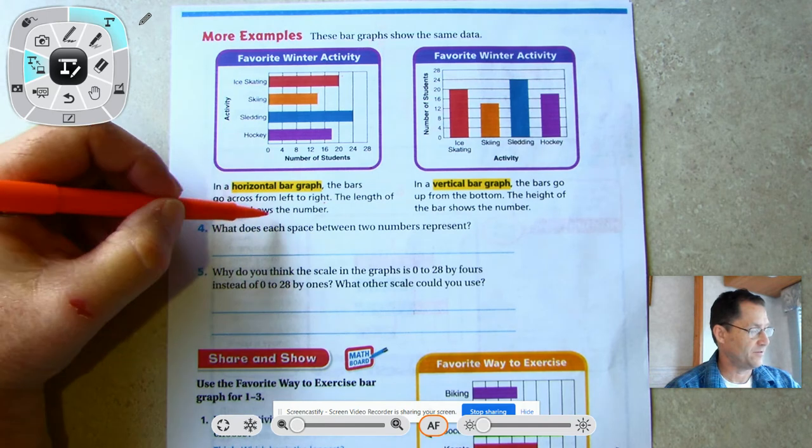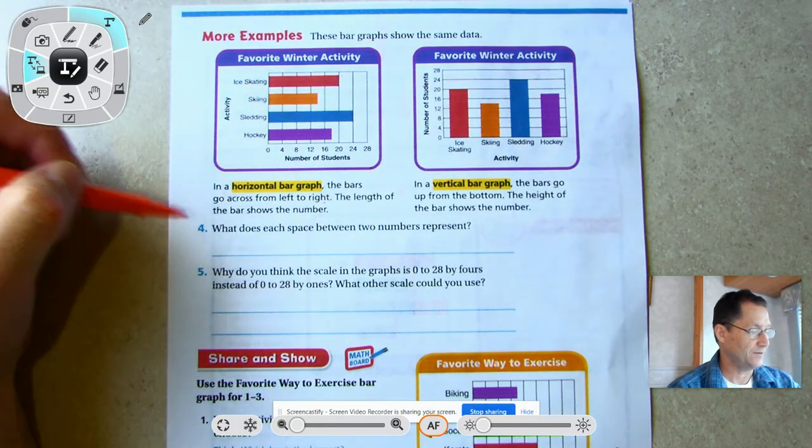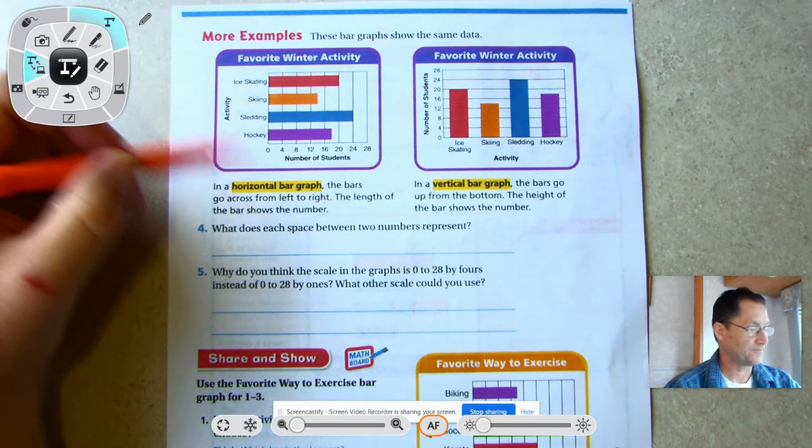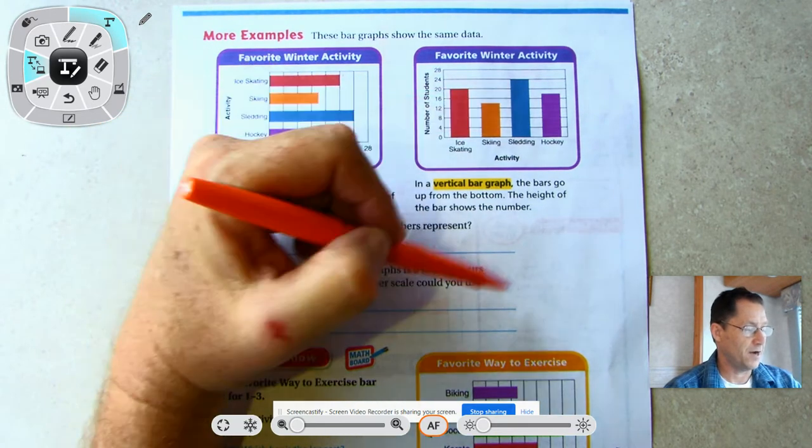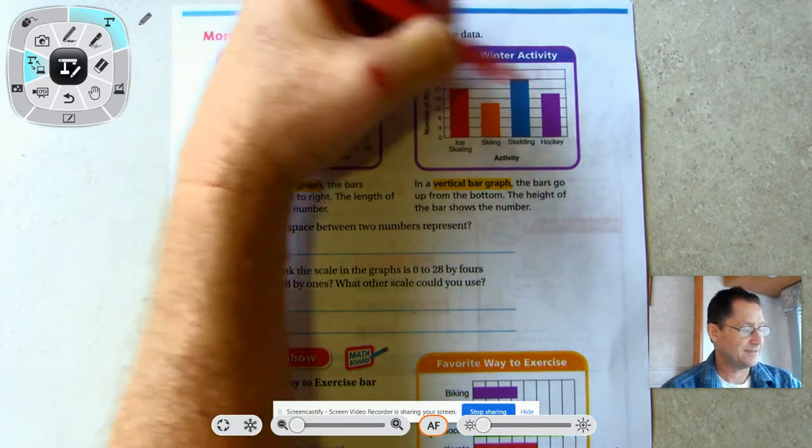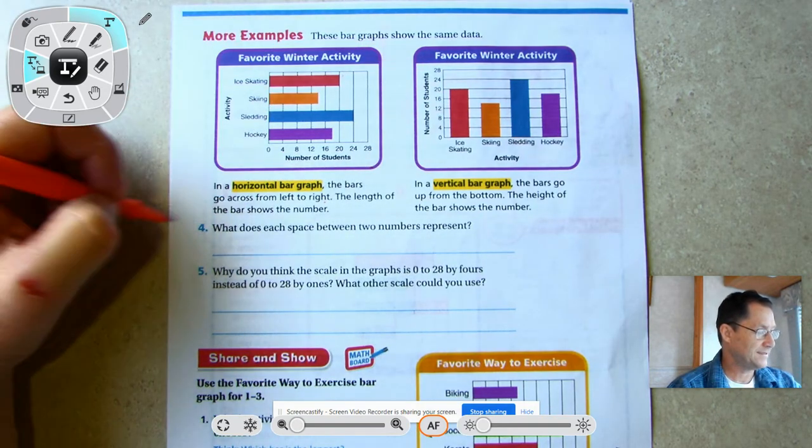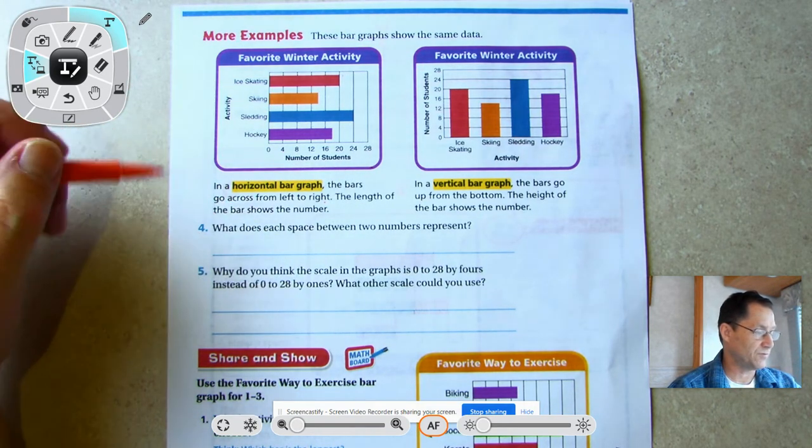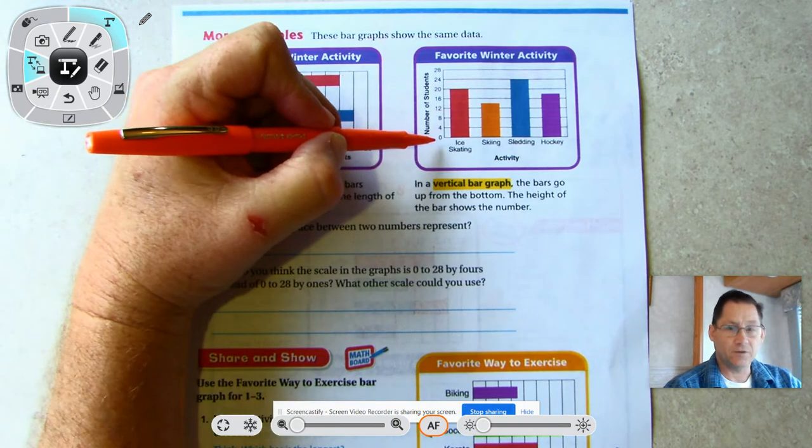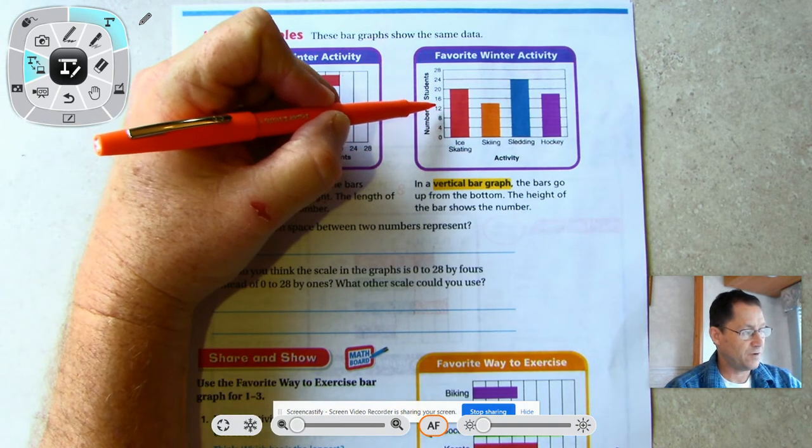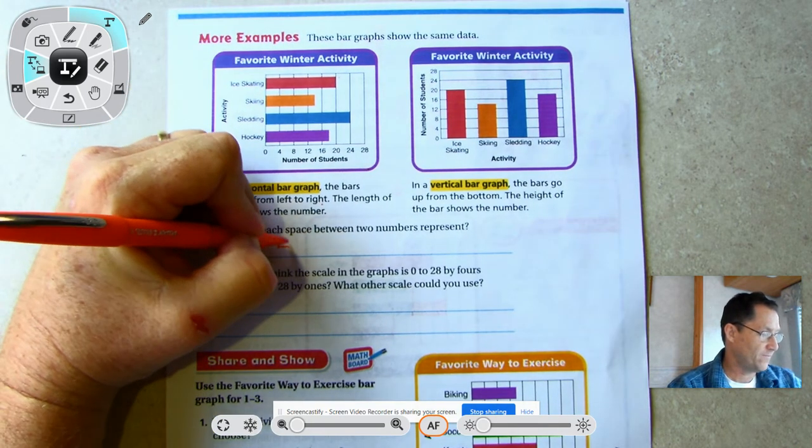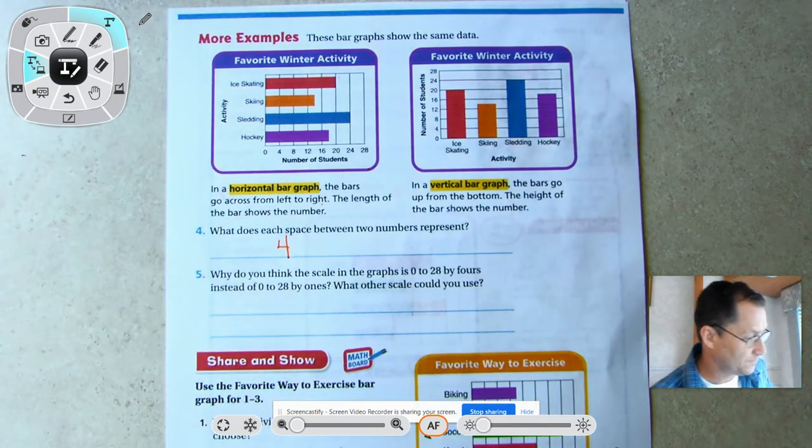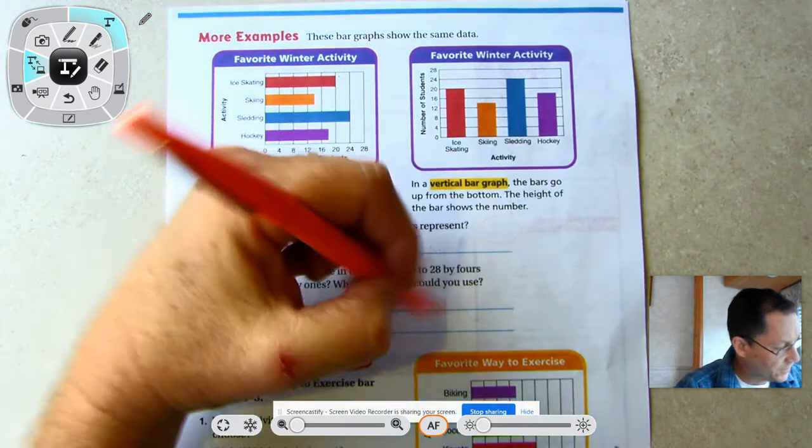In a vertical bar graph the bars go up from the bottom and the height tells you the number. What does each space between two numbers represent?